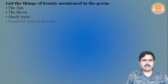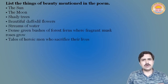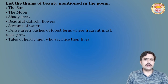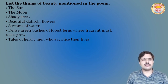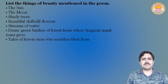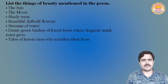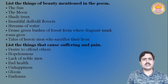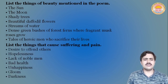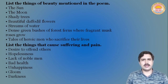The poet used here a list of things of beauty mentioned in the poem. They are: the sun, the moon, shady trees, beautiful daffodil flowers, streams of water, dense green bushes of the forest, thorns where fragrant musk rose grows, and courage of heroic men who sacrifice themselves. There is also a list of things that cause suffering and pain: desire to offend others, hopelessness, lack of noblemen, bad health, unhappiness, gloom, and darkness.